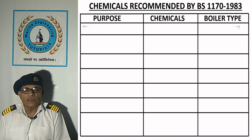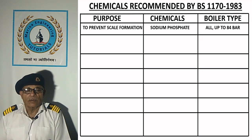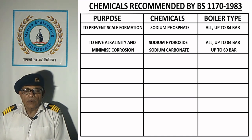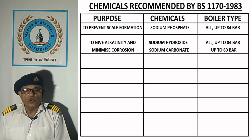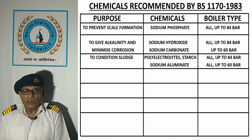First, to prevent scale formation, sodium phosphate is used for all boilers up to 84 bar. To give alkalinity and minimize corrosion, sodium hydroxide is used for all boilers up to 84 bar, and sodium carbonate for boilers up to 60 bar. To condition sludge, poly electrolytes, starch and tannins are used for boilers up to 84 bar.